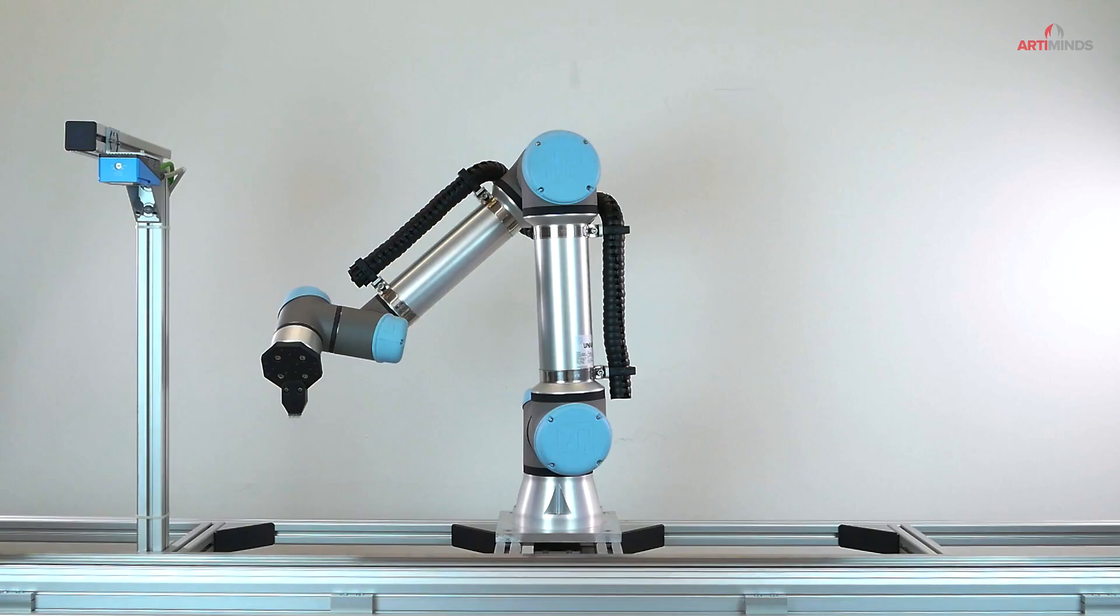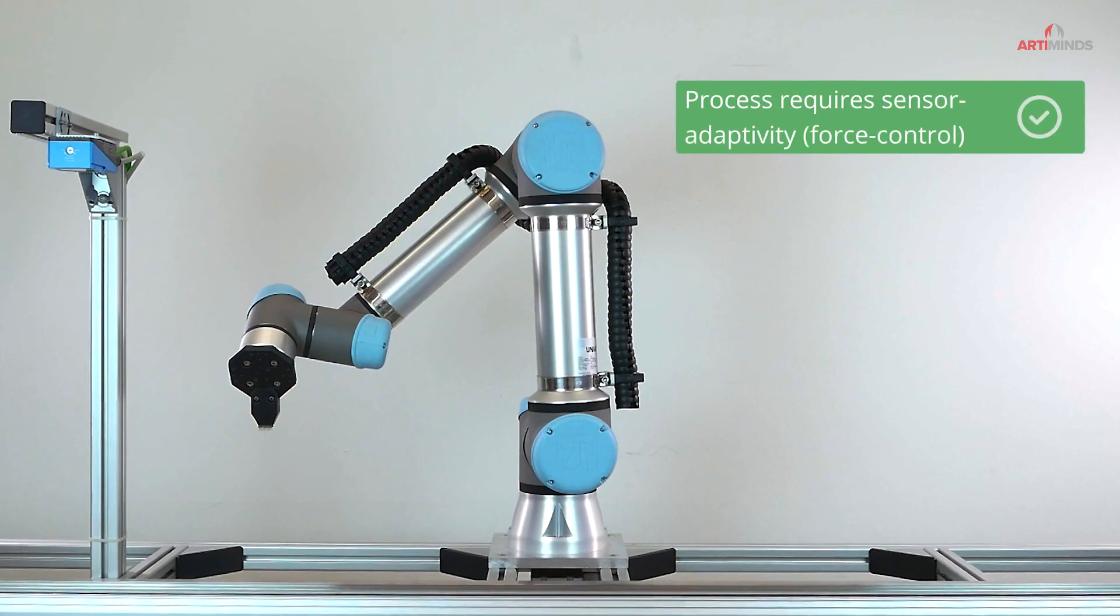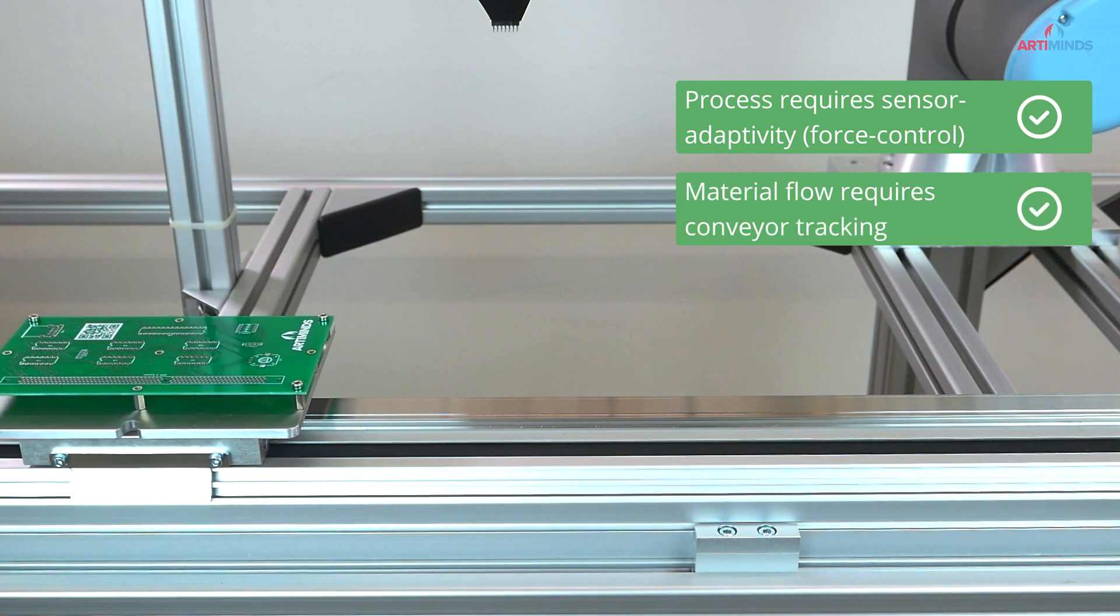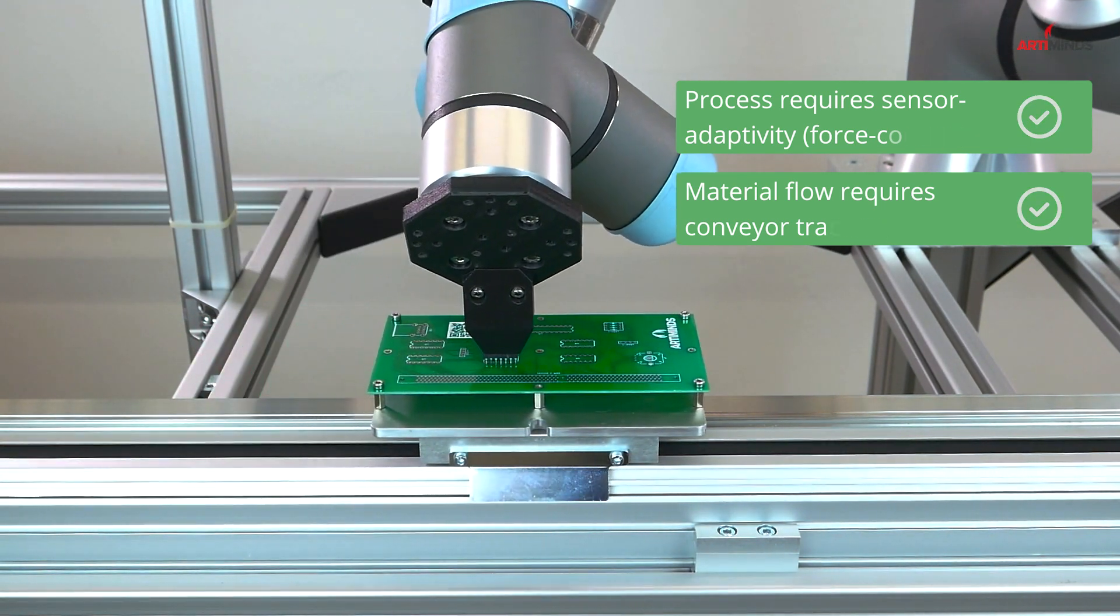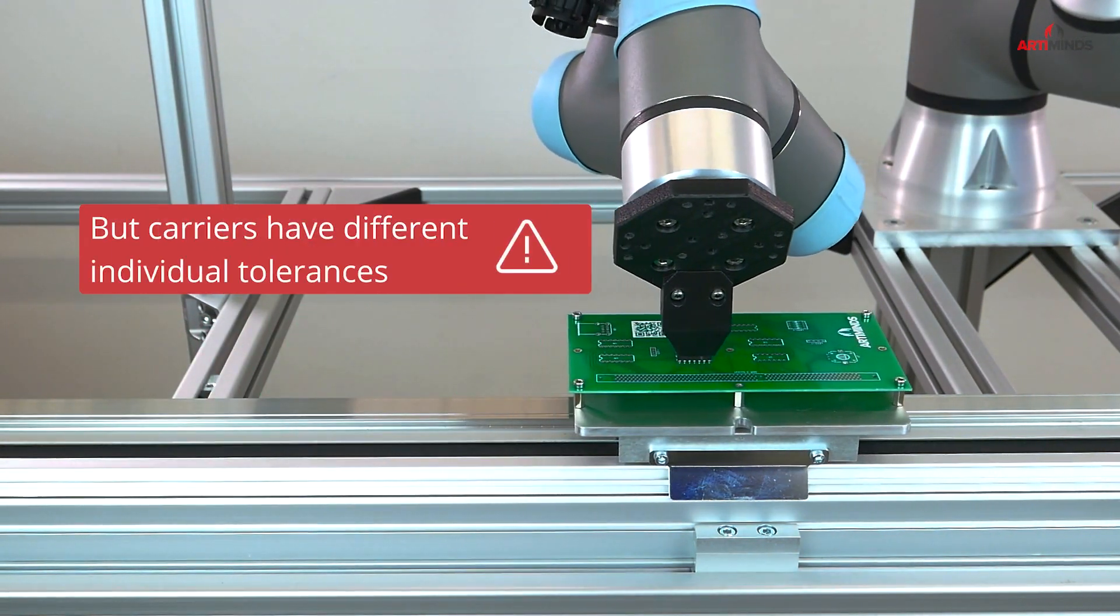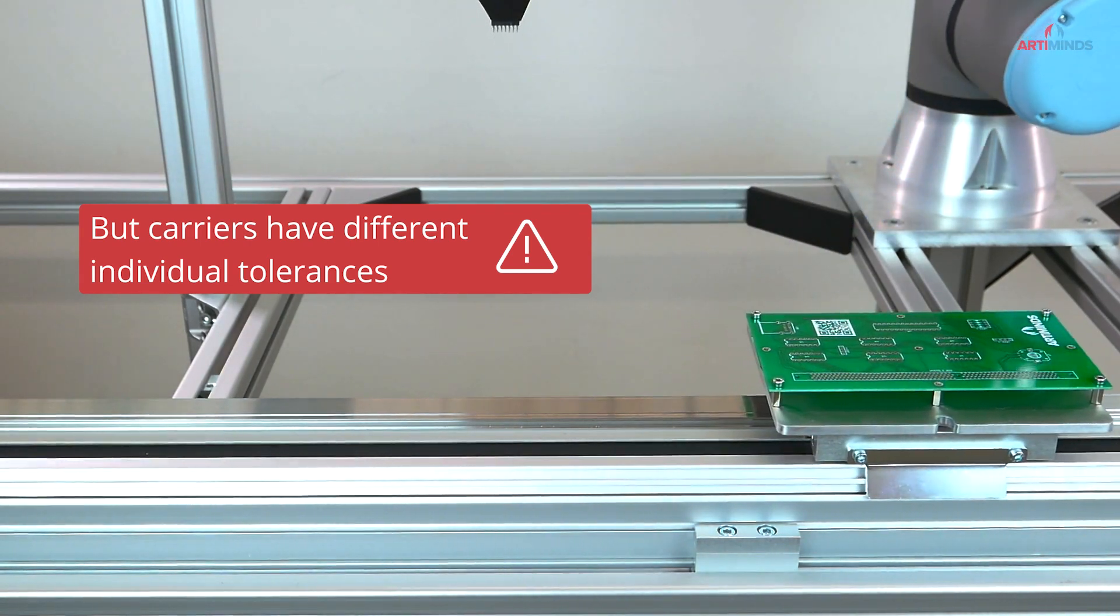In the following exemplary application, a force-controlled robot has the job to insert electronic components into a printed circuit board placed on a moving conveyor belt. As it turns out, however, the individual carrier's differing production tolerances hampered the automation of this process.